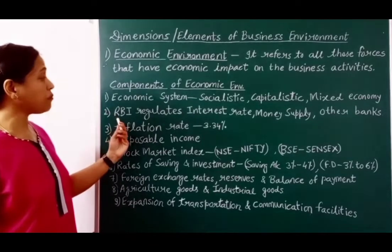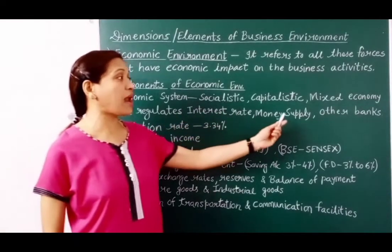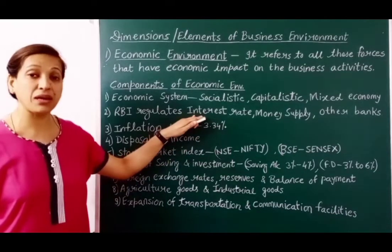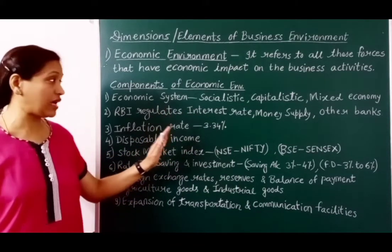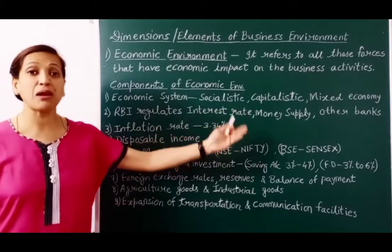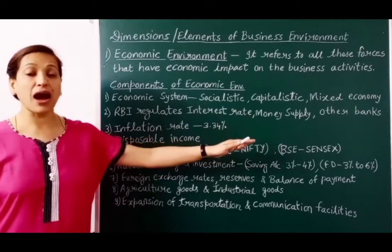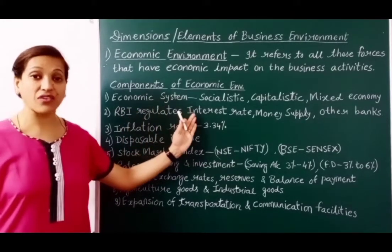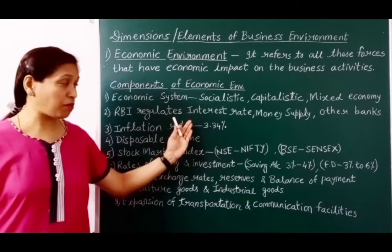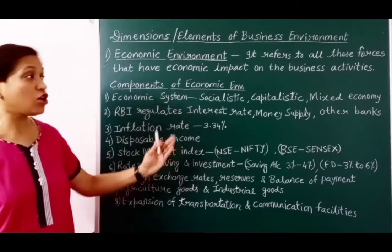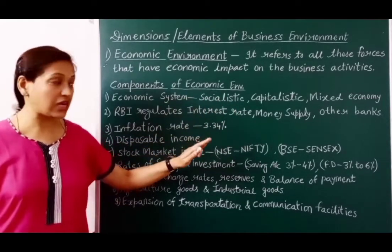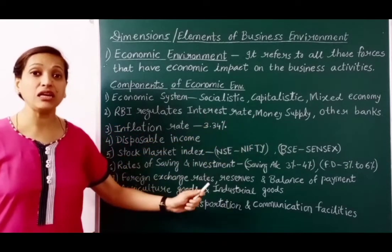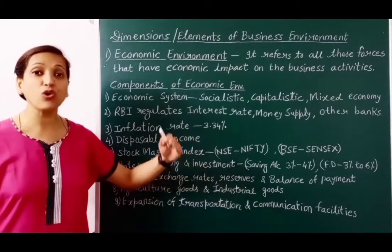The second component is that RBI regulates interest rate, money supply and other banks. RBI is the government's bank and the bank of other commercial banks. Other commercial banks are dependent on RBI for loans and advances. The current bank rate is 4.65%. If RBI reduces this interest rate, other commercial banks will borrow more from RBI, increasing money supply in the market, and private individuals and firms will also take more loans.